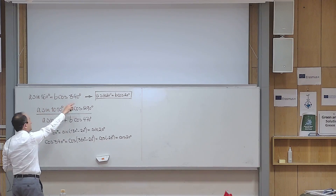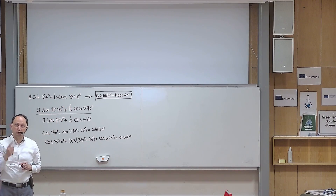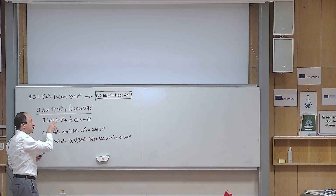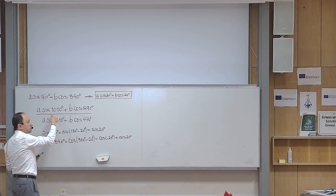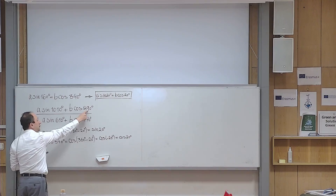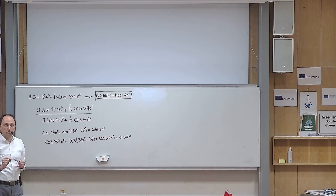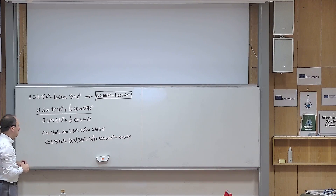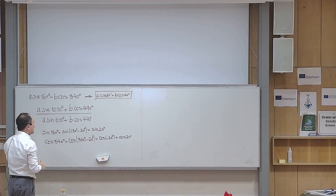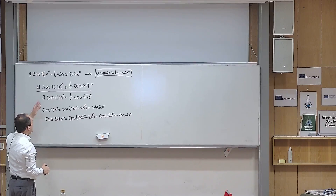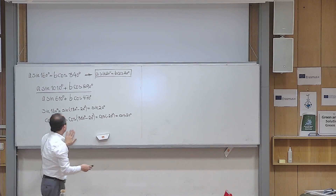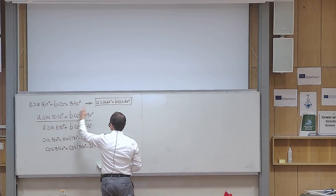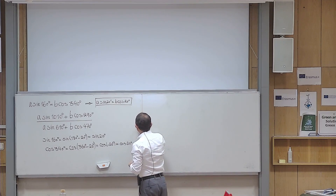Instead of working with two different angles, I can now work with just one angle: 20 degrees. This gives me a hint on how to continue — it shows that it's a good idea to connect all the angles in the fraction to 20 degrees. That strategy is very valuable when solving math problems. So let me do that here on this part of the board for each of the four terms.